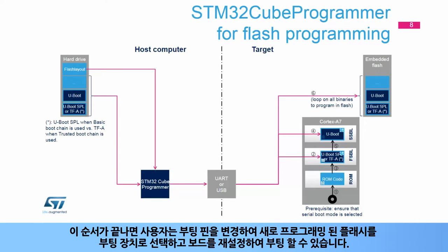Step 4: The boot chain remains in a loop in SSBL until the end of the flash programming process following the instructions from the flash layout. Step 5: When this sequence is finished, the user can change the boot pins to select the freshly programmed flash as boot device and reset the board to boot on it.